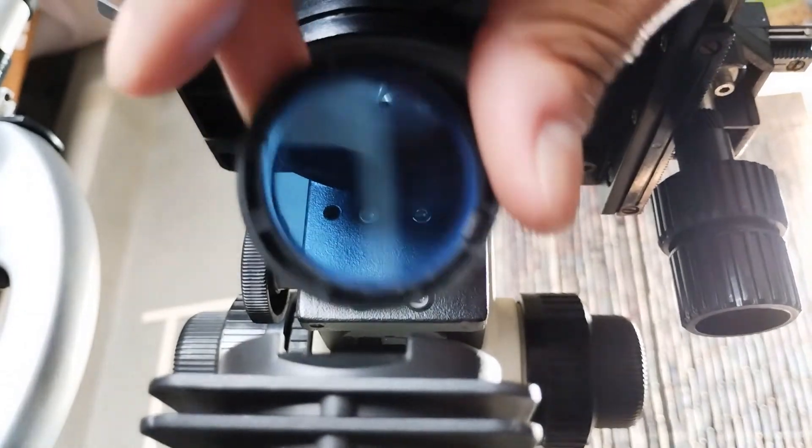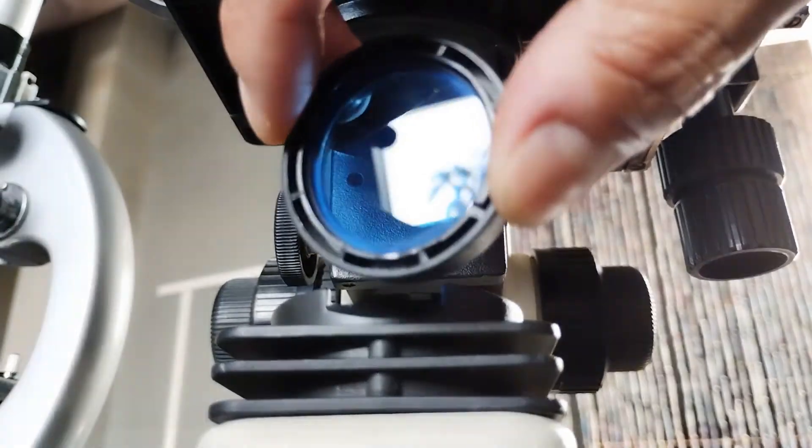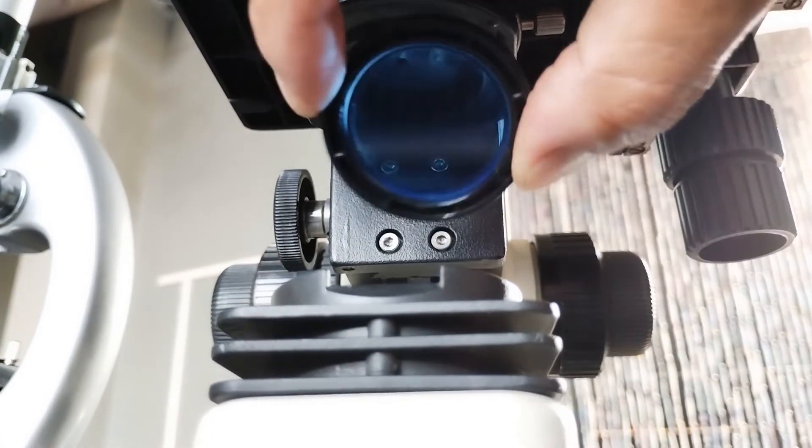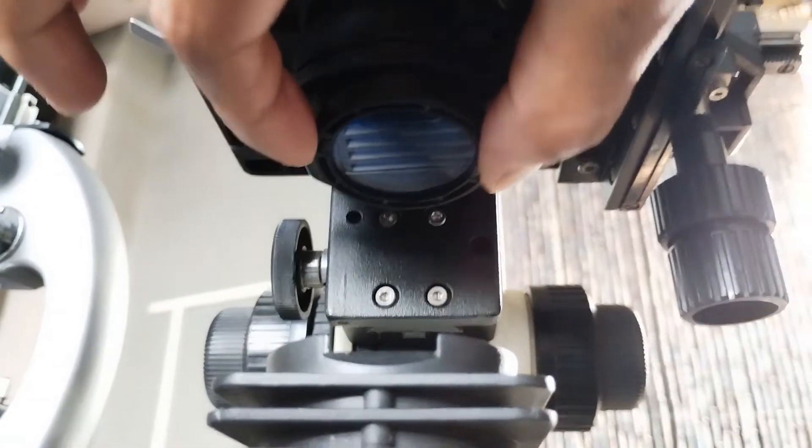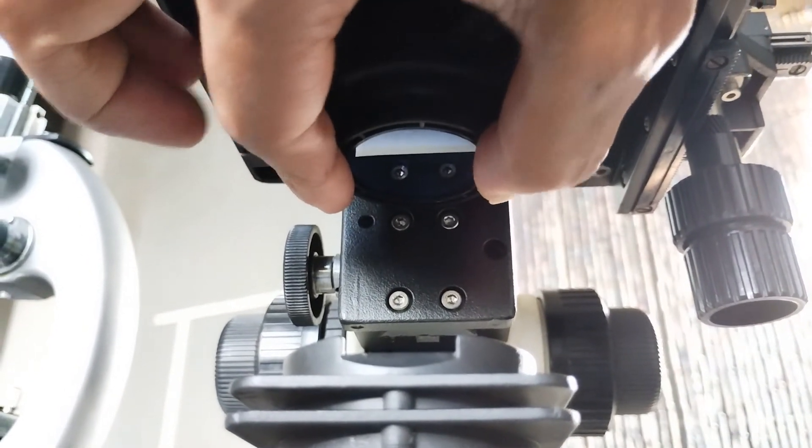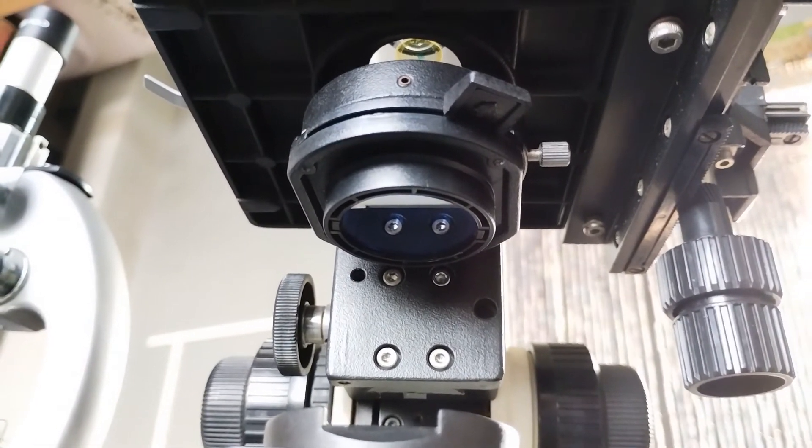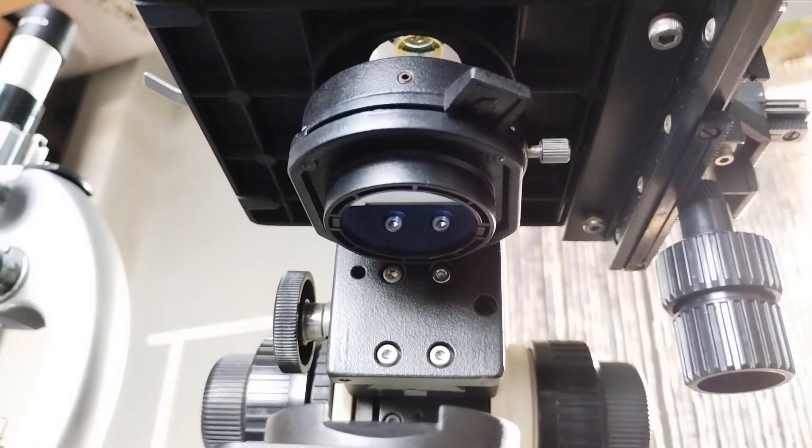Modern binocular microscopes usually come fitted with a blue filter underneath the iris diaphragm. The main advantage of a blue filter is that irrespective of the color of the light source, the blue filter will render it colorless and give a clear white background in the field of view. This is both soothing to the eyes and also doesn't mask the true color of the specimen.